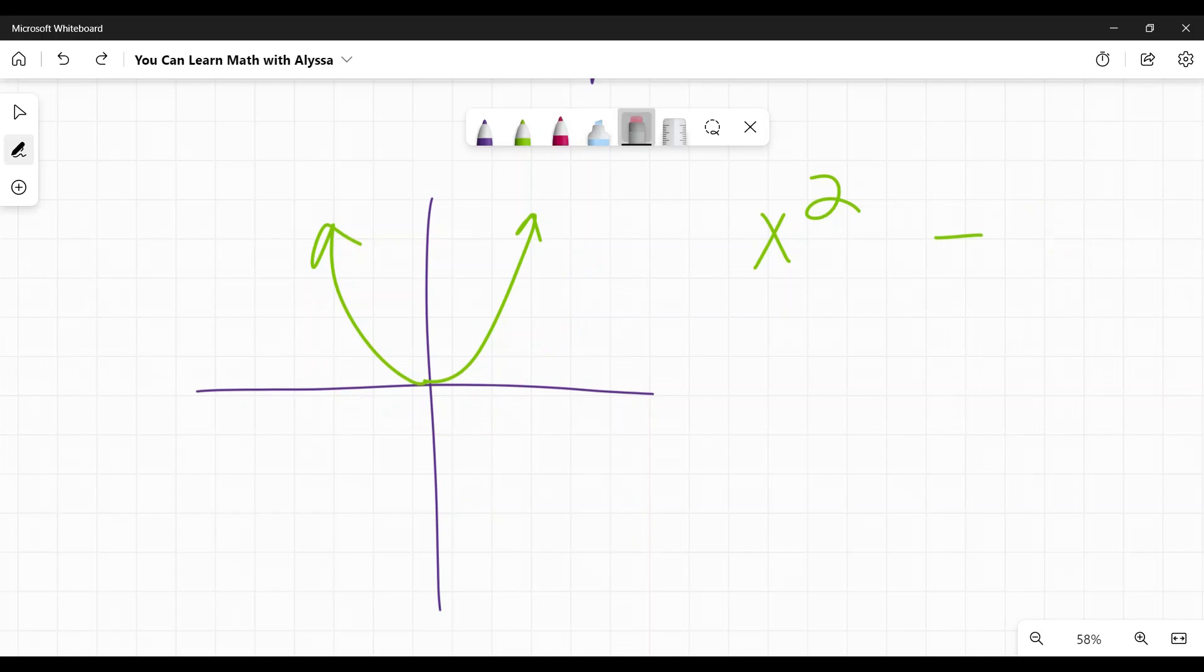Okay. If it is inside a parentheses with that x, like (x - 2)², that constant is inside there with the x.